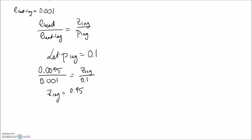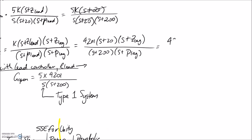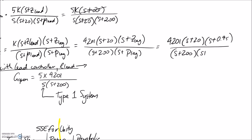Let's write the final version of our controller. We've now decided on all values: Z_lag equals 0.95, P_lag equals 0.1, Z_lead equals 20, P_lead equals 200, and K equals 4201. This is our final controller transfer function of the lead-lag variety. In an exam, this is pretty much where you'd leave it, since you can't check whether what you designed matches real-world performance.